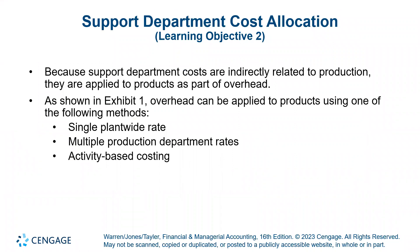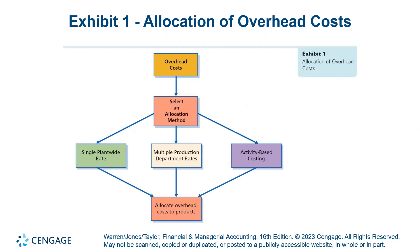We discussed in earlier chapters, starting in Chapter 16, the allocation of overhead. The single plant-wide rate, or the traditional approach, was introduced in Chapter 16. We could also use multiple production department rates to see the difference in cost that creates, and we could use activity-based costing, which was the focus of Chapter 18. Regardless of which approach we choose, the idea is that we are allocating all of the costs that belong to the product — product versus period cost, which was covered in Chapter 15.